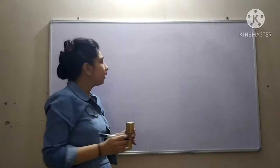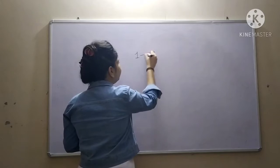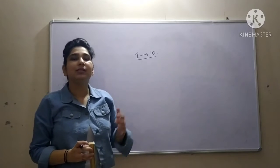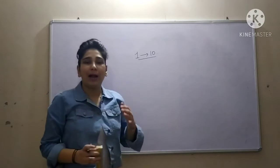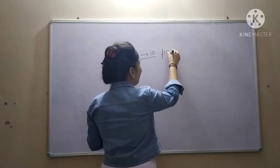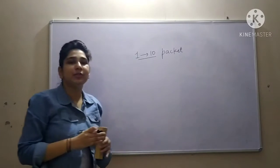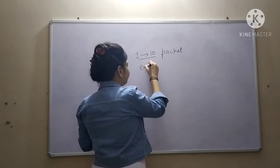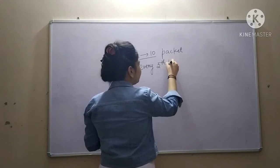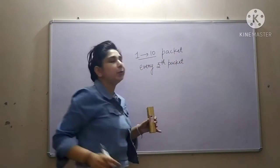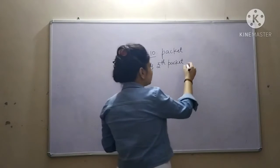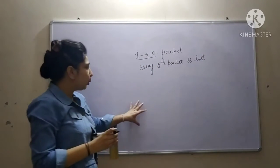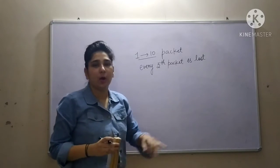The question is: we have to transmit packets from 1 to 10. Each packet transmitted to the receiver is given a sequence number. We are sending packets 1 to 10 onto the channel in sequence, and every fifth packet which you are transmitting is lost.